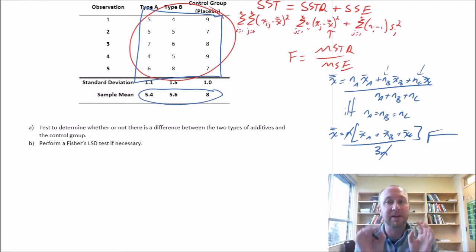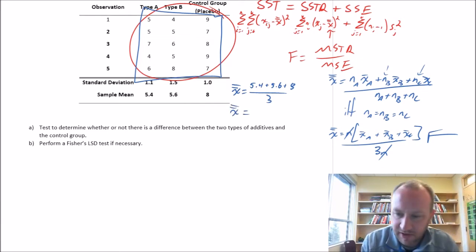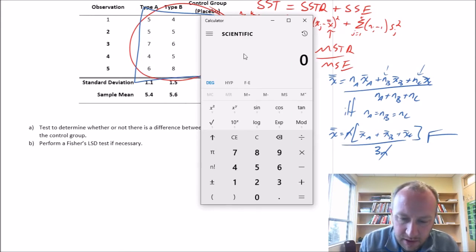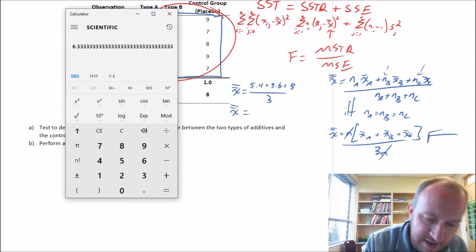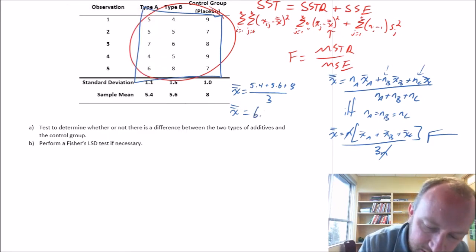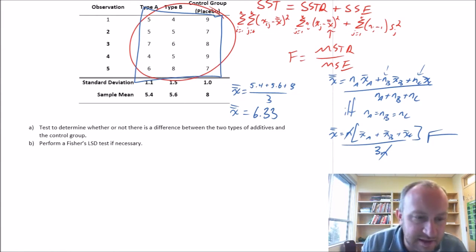Now I'm stressing this because it's often the case that students jump straight to that calculation right away. And that's fine, it's a shortcut, but it only works in that one case where your sample sizes are the same. In our situation here, it happens to work, so we can use this shortcut. So when I want to calculate that grand mean, it's just going to be 5.4 plus 5.6 plus 8 divided by 3. So our grand mean is 6.33.